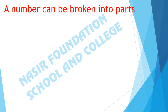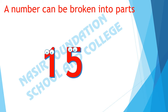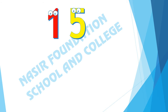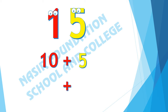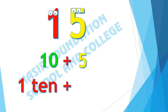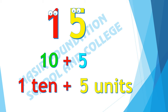Our number can be broken into parts. Let's take an example: 15. If we add 10 and 5 we get 15. In 15, there is one 10 and there are 5 units. It makes 15.